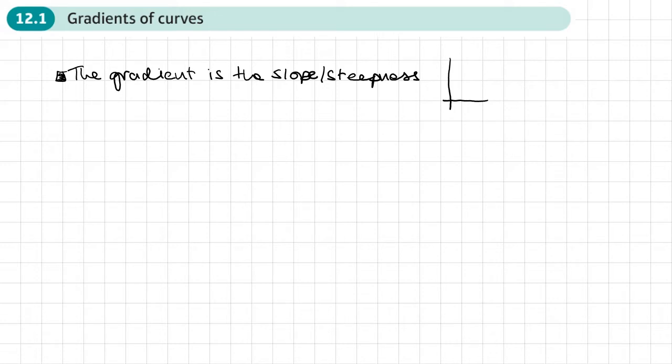At GCSE, it would have been the slope or steepness of a line, and we would have got that from y equals mx plus c, where m gives us the steepness. But what if we've got a curve?